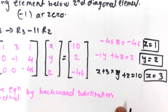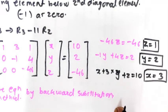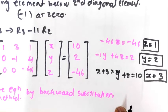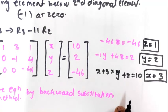In this way we have got the values: x = 3, y = 2, and z = 1. These are the unknown values found using Gauss elimination method. I hope you understood this numerical. Thanks for watching.